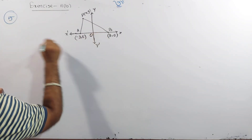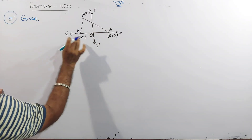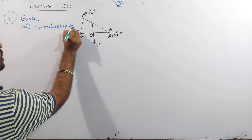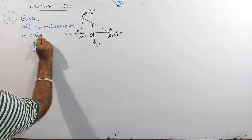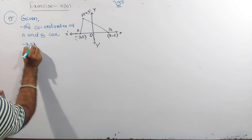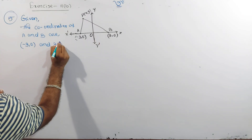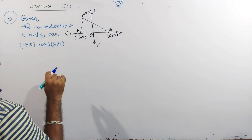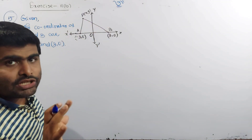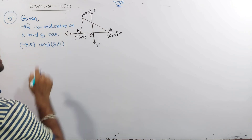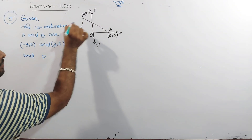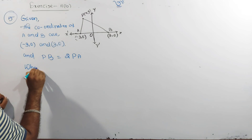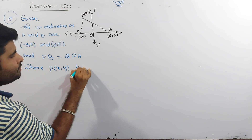We have the condition for A and B. A is (3, 0) and B is (−3, 0). We find PA and PB. The condition is PB equals 2 into PA.